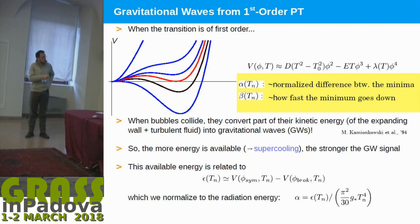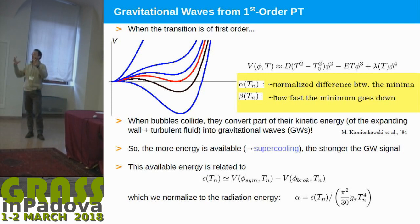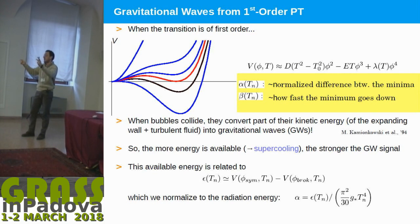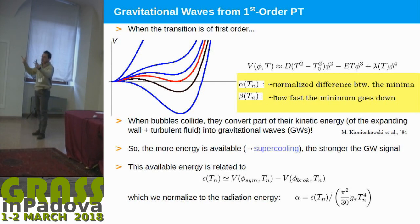Moreover, there is the important point that not all the energy involved in the bubble can be converted into gravitational waves. Part of it can increase the temperature of the plasma — so you lose some energy — or, for instance, generate turbulence. The critical quantity here is alpha: it is the energy gap between the phase being tunneled into and the origin. When alpha is larger, we say the transition is supercooled.